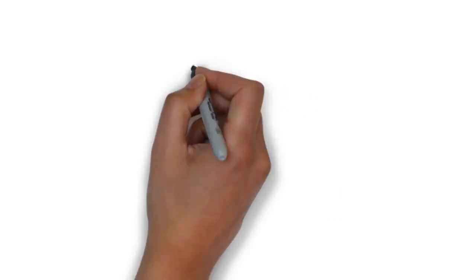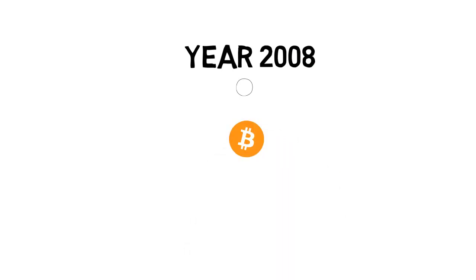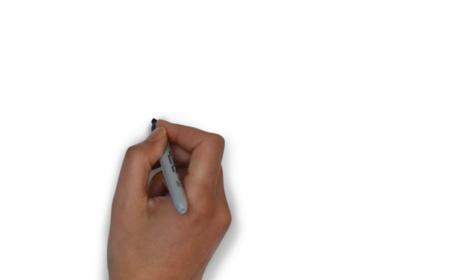Back in 2008, Bitcoin white paper was released on the public internet. This was a big milestone in cryptocurrency history. However, the digital currency history did not start in 2008.